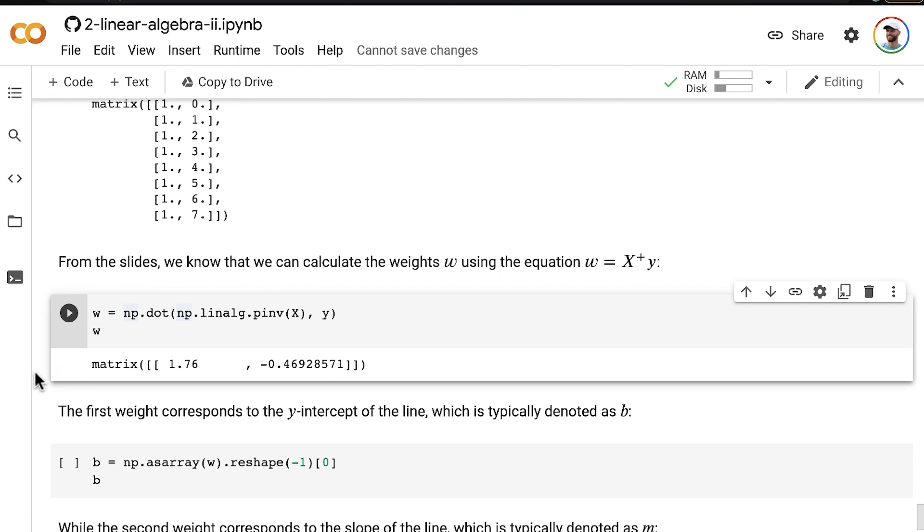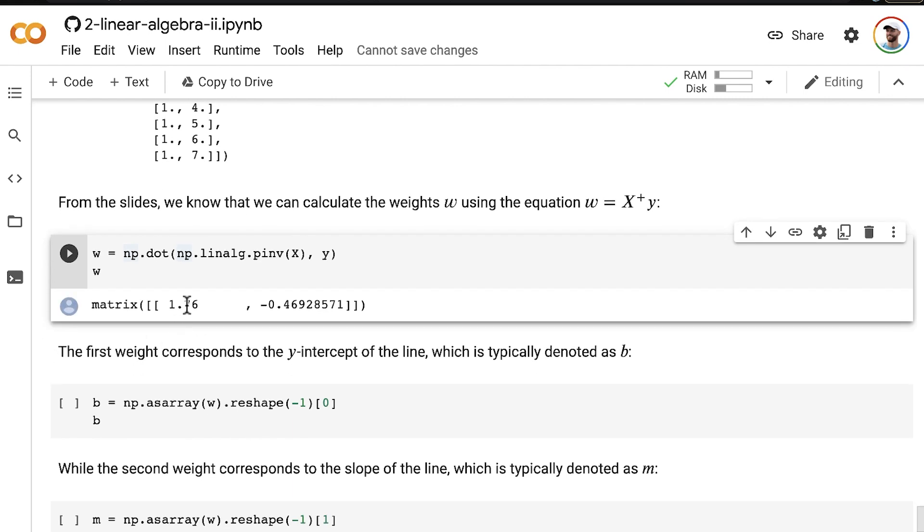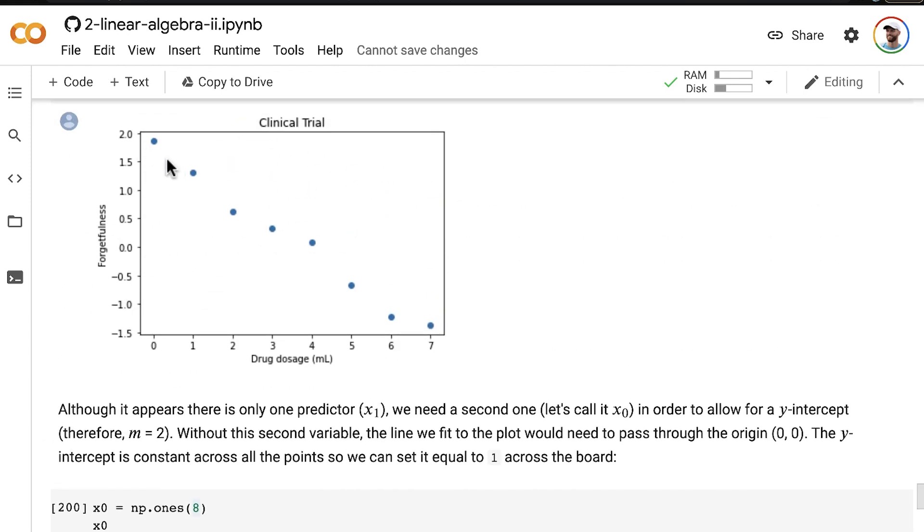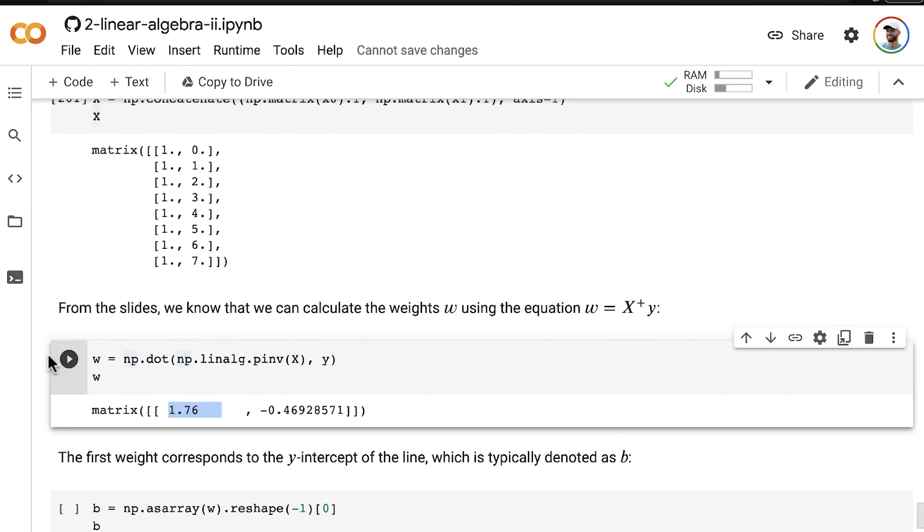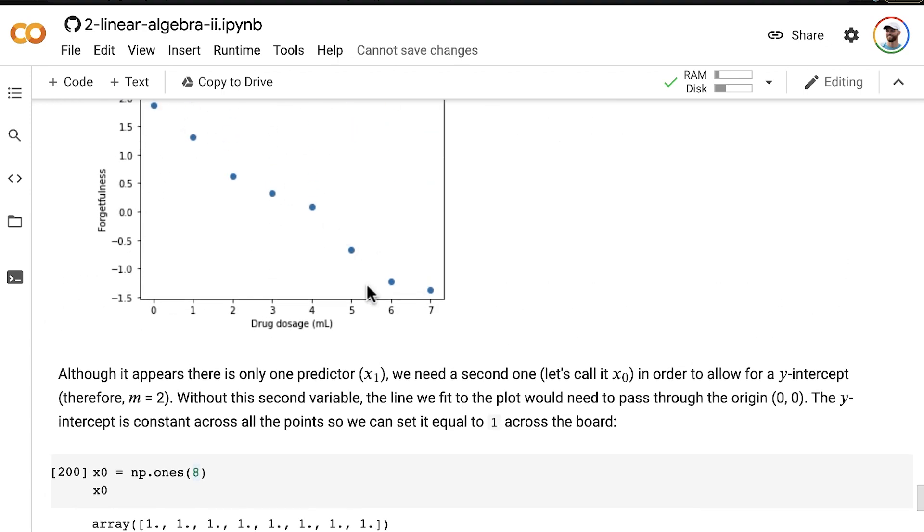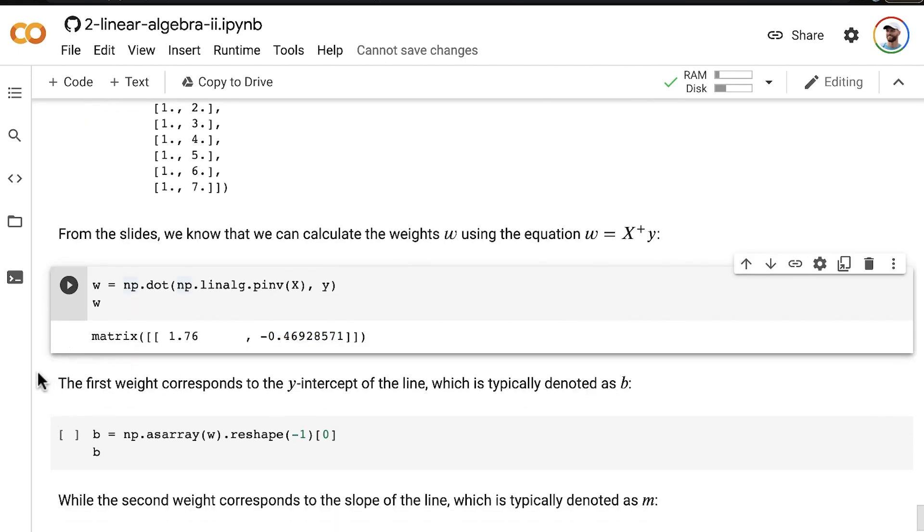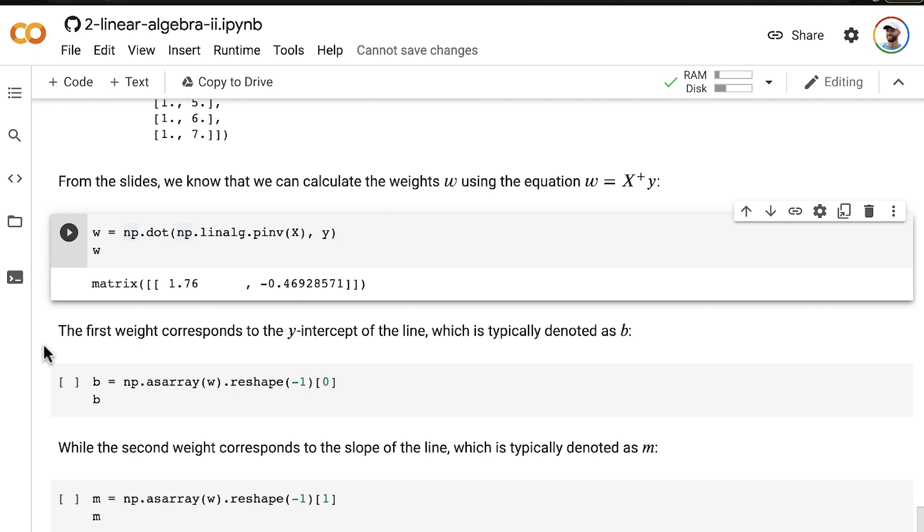My mind was blown completely the first time that I learned this. I didn't know that we could use linear algebra to solve for unknowns like this. Just totally mind-blowing for me. I hope it is for you too. We've solved that now the y-intercept for this line is equal to 1.76, and the slope of the line is negative 0.5 roughly. So if the significance of that hasn't sunk in yet, let's now plot things out so you can see it. And maybe then your mind will finally be blown.